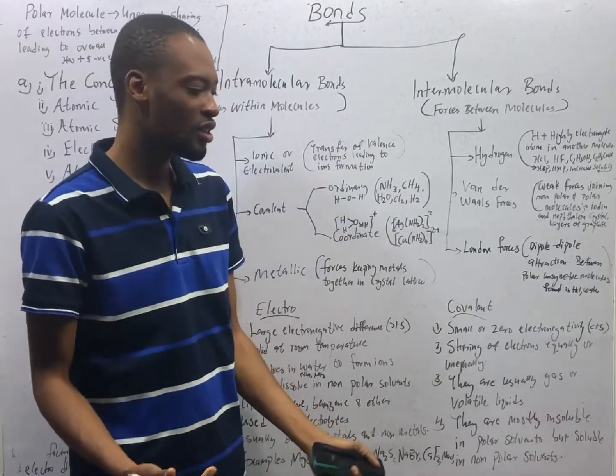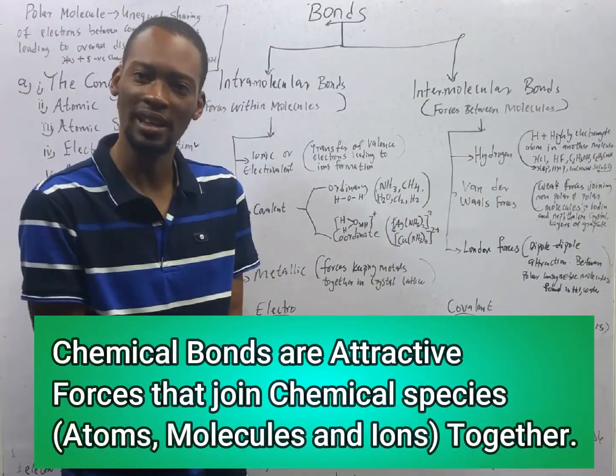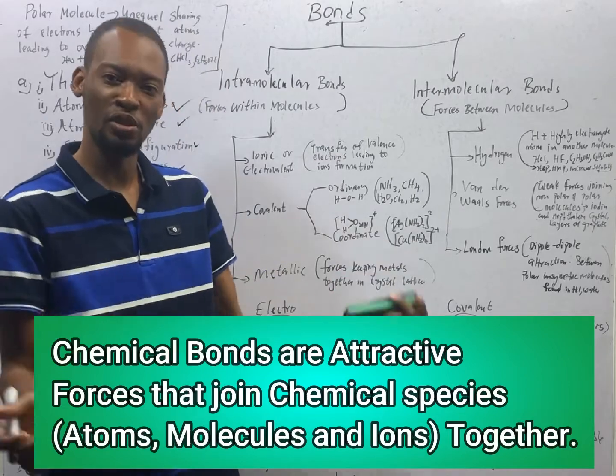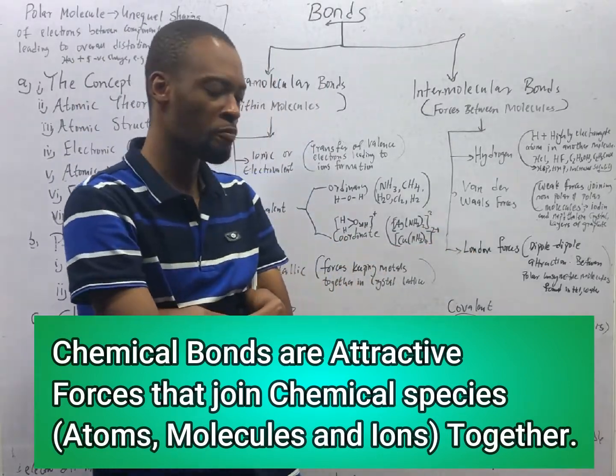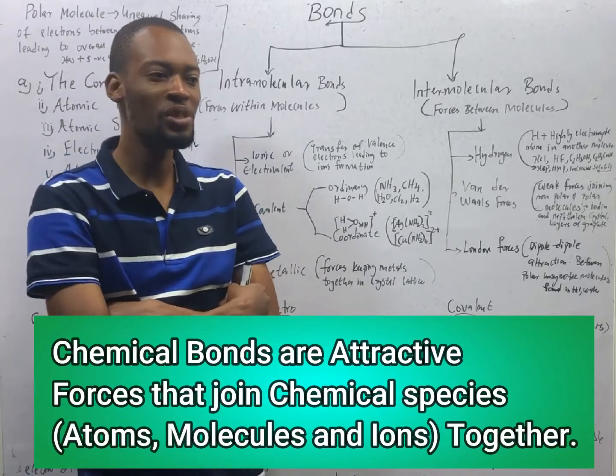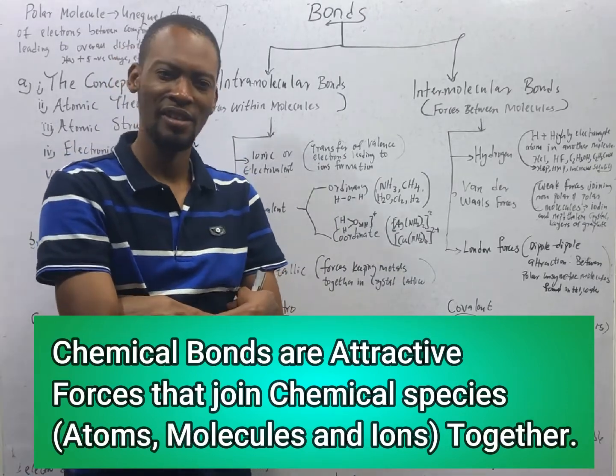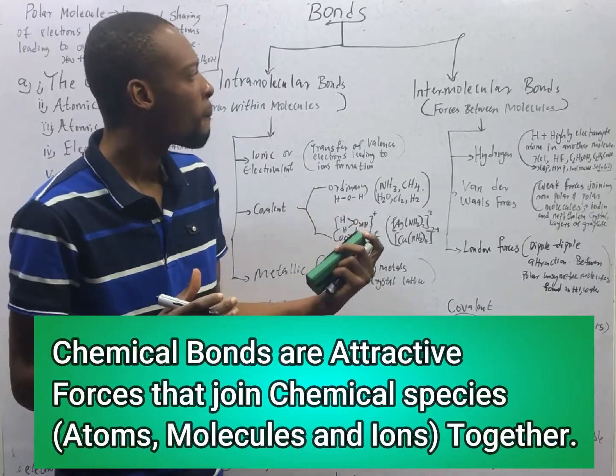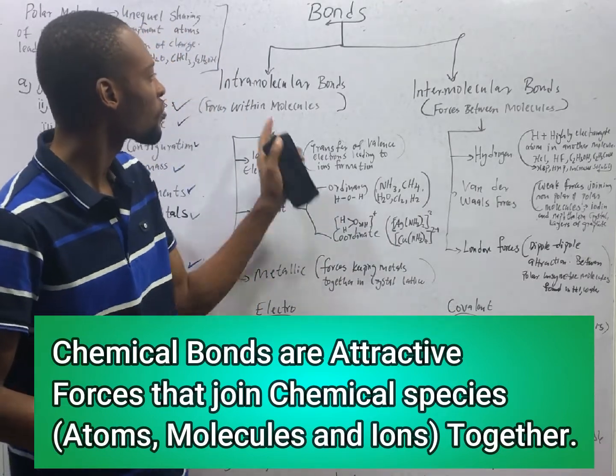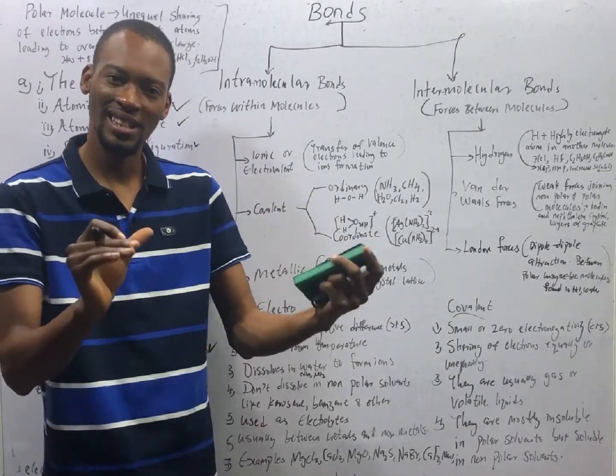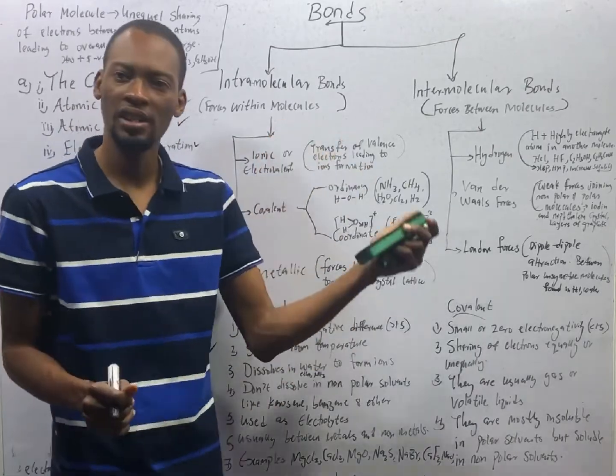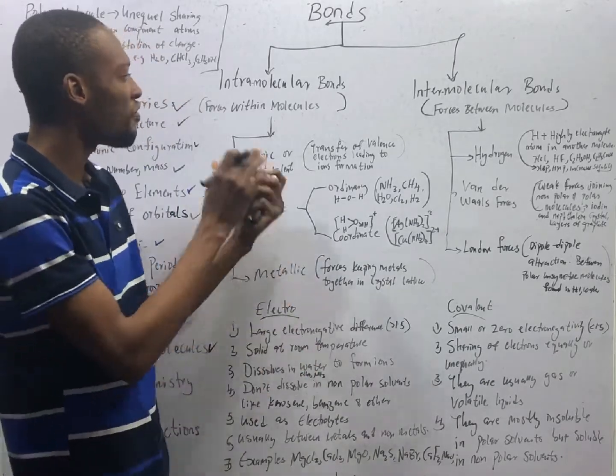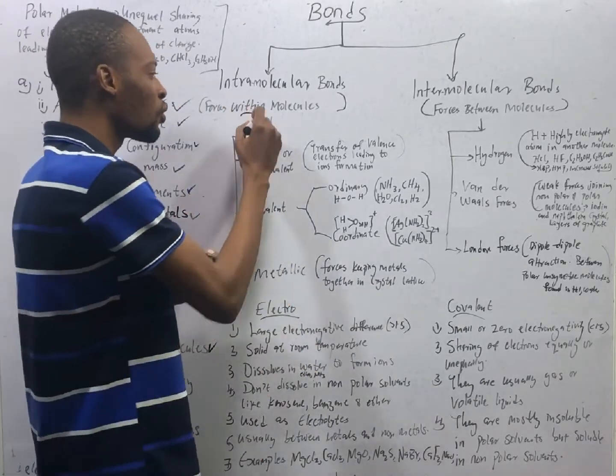Bonding is two or more molecules coming together to form a union, combining of molecules. If you are saying let us bond, let us come together. Marriage is bonding between a man and a woman. Metal and non-metal coming together to form a strong bond, chemical bonding. Chemical bonding is divided into intramolecular bonds and intermolecular bonds. Intramolecular bonds are bonds or forces within molecules.